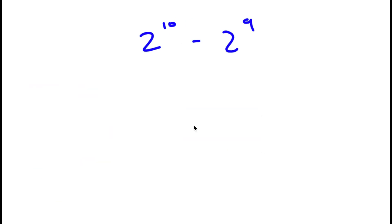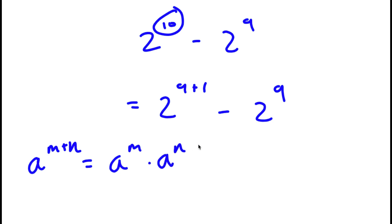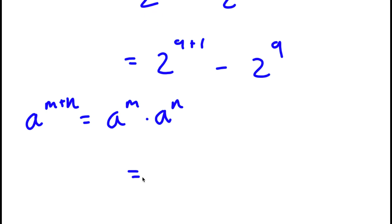In this problem, I have 2 to the power of 10 minus 2 to the power of 9. To solve this problem, I'm going to first start by replacing 10 with 9 plus 1. So now I have 2 to the power of 9 plus 1 minus 2 to the power of 9. If I have something in the form a to the power of m plus n, this equals a to the power of m times a to the power of n. So 2 to the power of 9 plus 1 can be rewritten as 2 to the power of 9 times 2 to the power of 1.